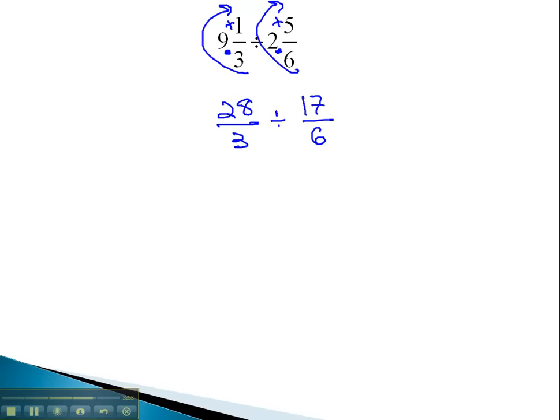Again, with division, we know we have to rewrite it as a multiplication problem. We're gonna multiply by the reciprocal of the second fraction, 28 thirds times 6 over 17. We can now go back and reduce. 6 and 3 are both divisible by 3, 1 and 2 times. And when we multiply across, 2 times 28 is 56, and 1 times 17 is 17.